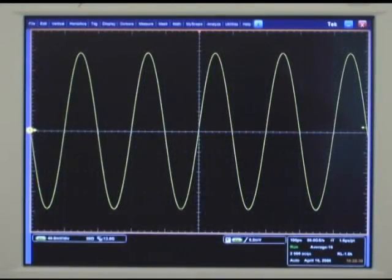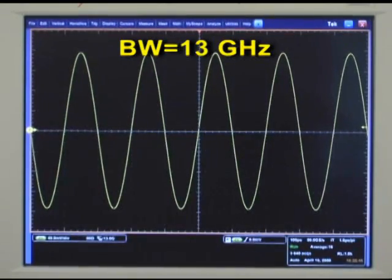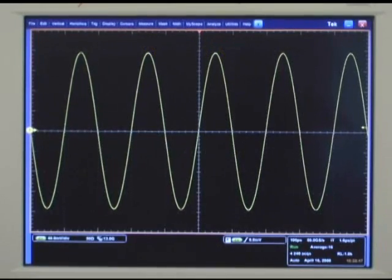For comparison, let's see how the same signal looks on a Tektronix DSA 70,000 series scope set at 13 GHz. The signal looks like a well-behaved sine wave.